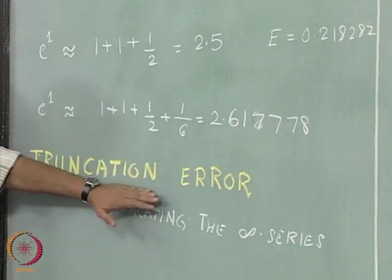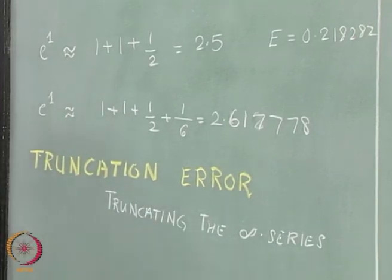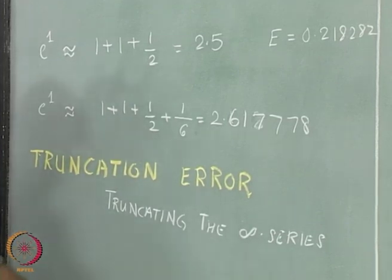The idea about truncation error is that it arises because we are truncating the infinite series. That is where the truncation error arises. The second type of error which is of vital importance...